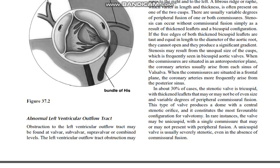In about 30% of cases, the stenotic valve is tricuspid, with fused leaflets that may or may not be of even size and variable degrees of peripheral commissural fusion. This type of valve produces a dome with a central stenotic orifice, and it constitutes the most favorable configuration for valvotomy.